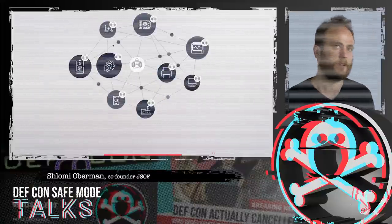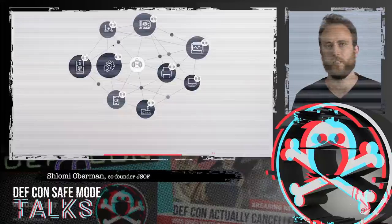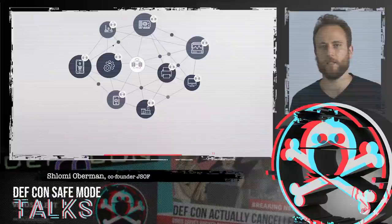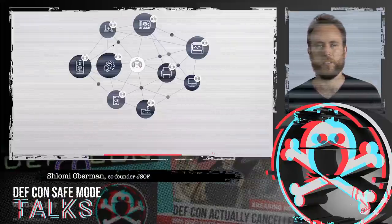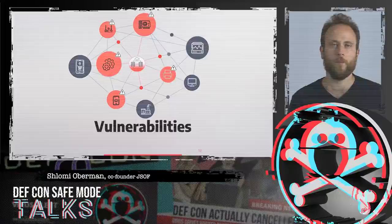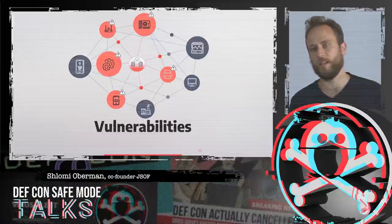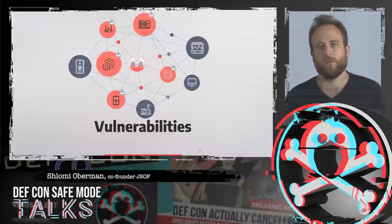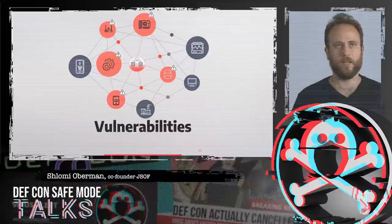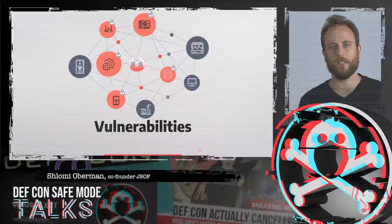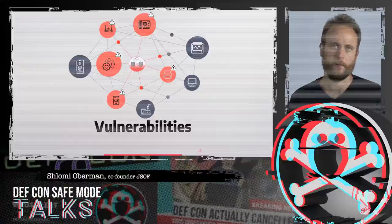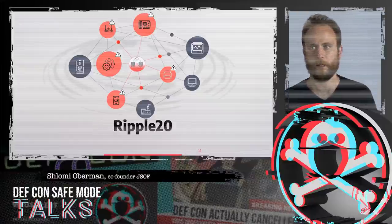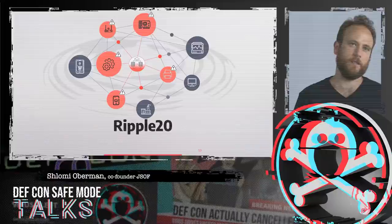You have a network of devices, a network of different vendors, each selling to each other to create final products built like Lego from different pieces. When one part at the very beginning of the supply chain — strategically located at the beginning — gets affected by a vulnerability, different devices along the supply chain get affected. This is what happened with Ripple20, and this is why it affects so many devices.